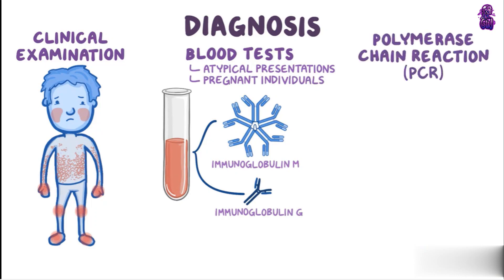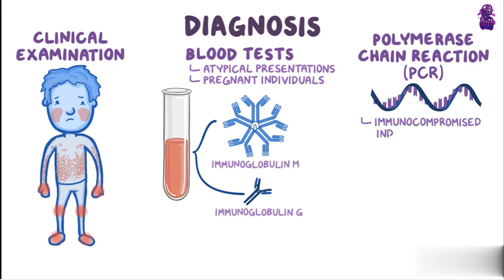Another option is polymerase chain reaction, or PCR, which looks for viral DNA. It's the preferred diagnostic method for Parvovirus B19 infection in immunocompromised individuals, who typically do not have high IgM or IgG levels in response to an infection.